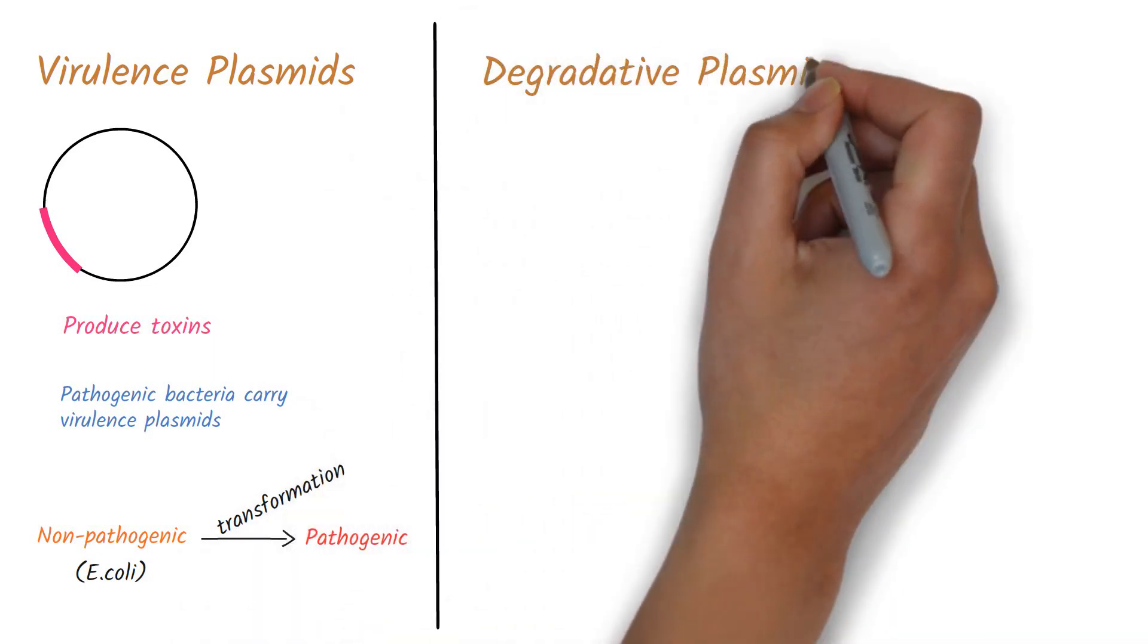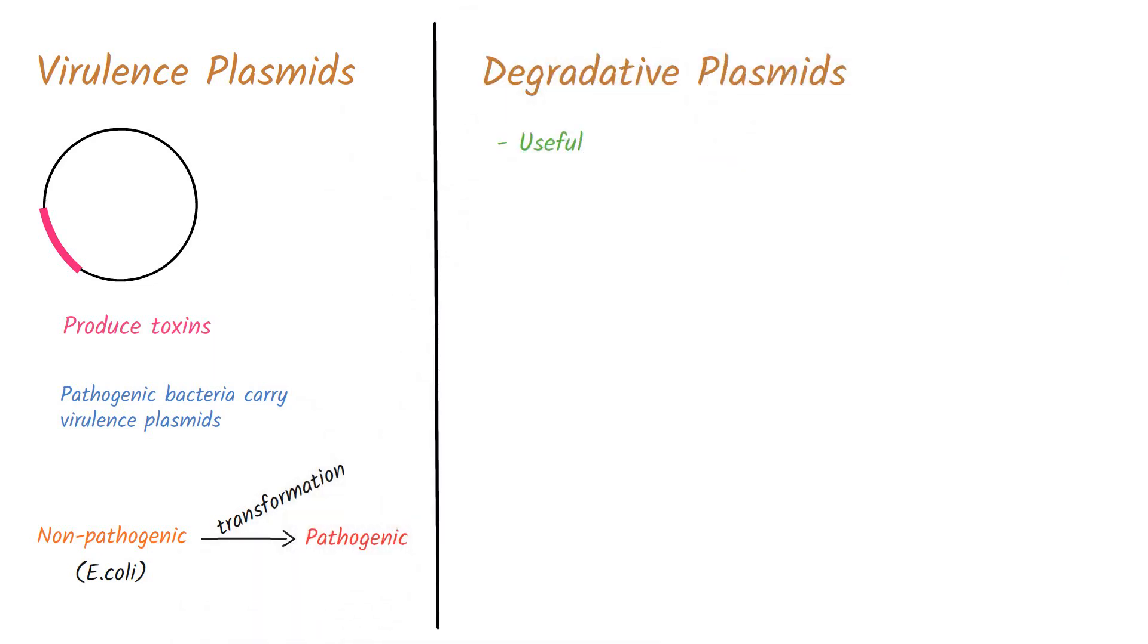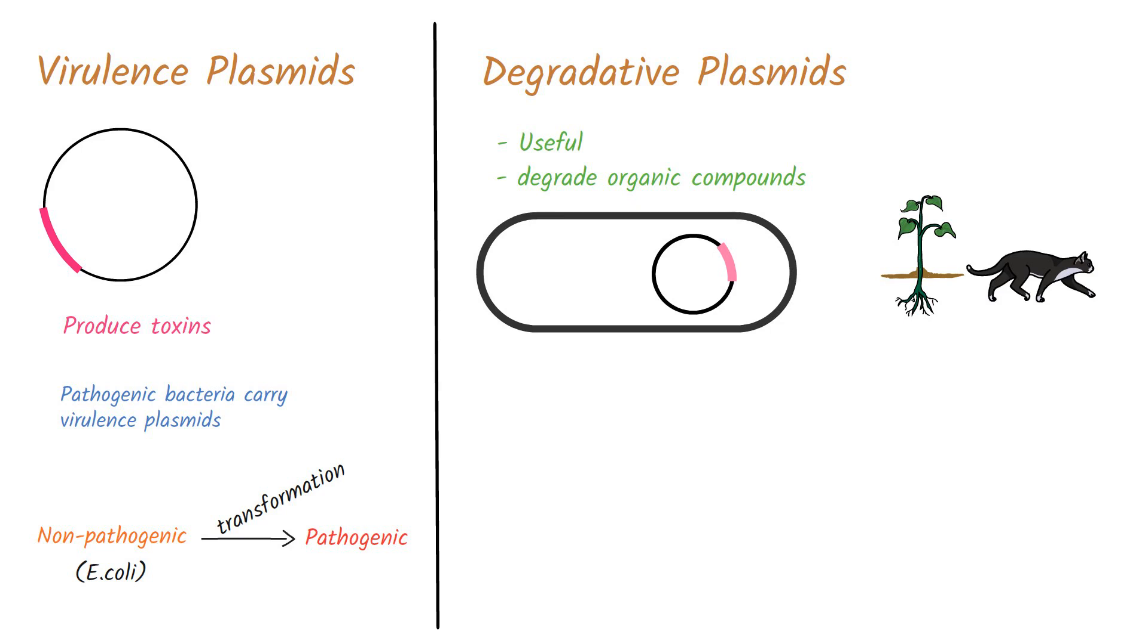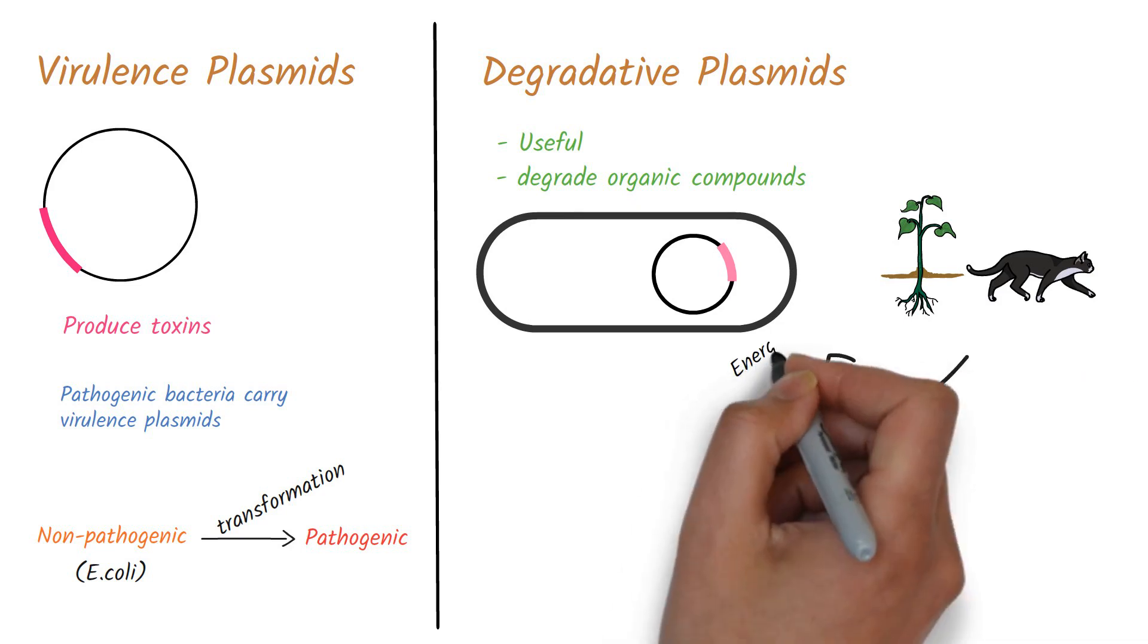Degradative plasmids are very useful to the environment, as they degrade organic compounds. Microorganisms having degradative plasmids play an important role in degrading the dead organic matter of plants and animals. Microorganisms utilize the organic matter for energy and carbon sources.